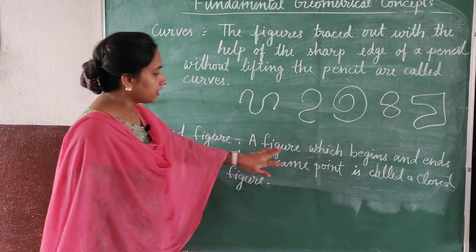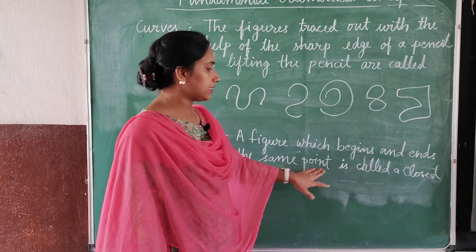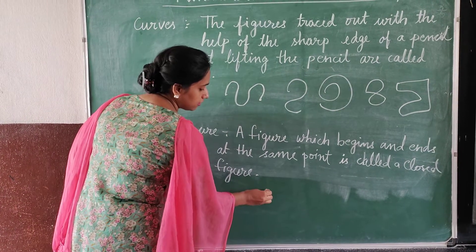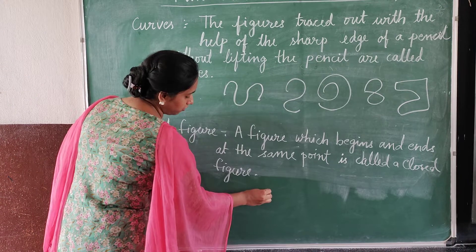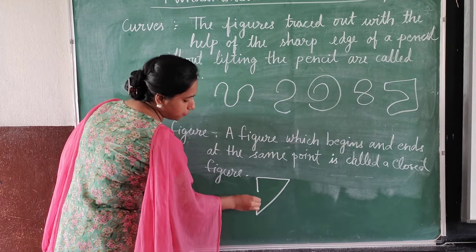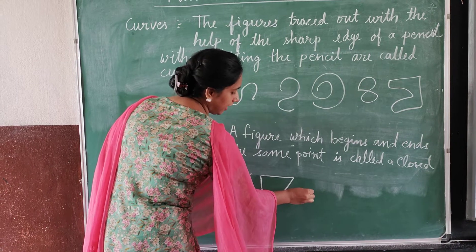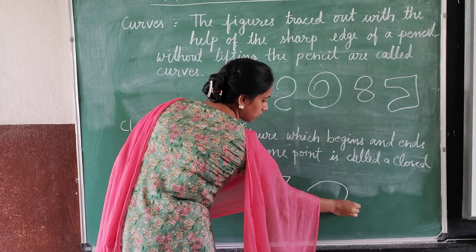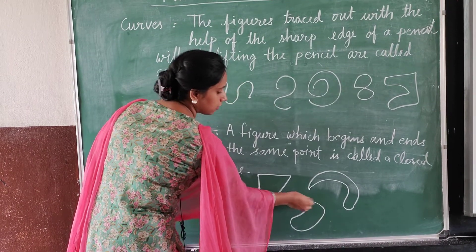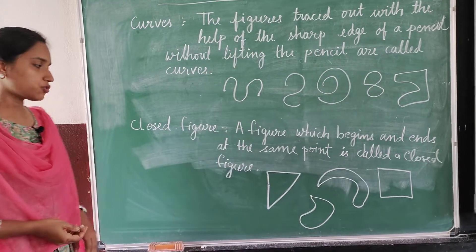Next, closed figure. A figure which begins and ends at the same point is called a closed figure. When you start drawing a figure, if you start with a point and end at the same point, then that figure is called a closed figure. These all are samples of closed figures.